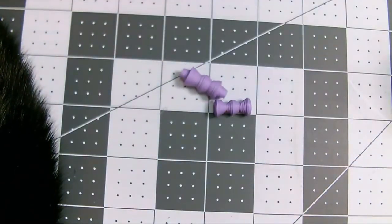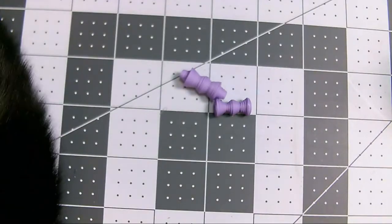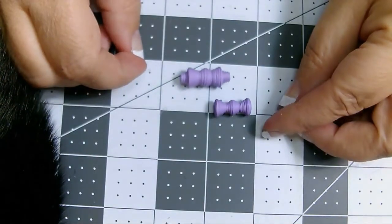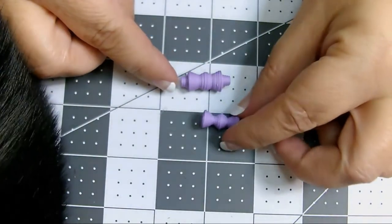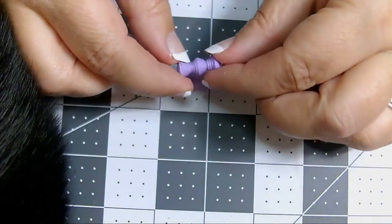Here you can see the difference between a bow tie bead using both strip A and strip B, and the bow tie bead using just strip B. The second bead is so thin, it almost looks like three beads stuck together.